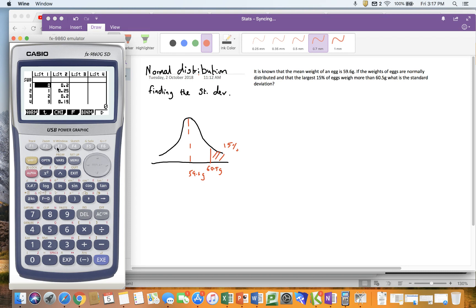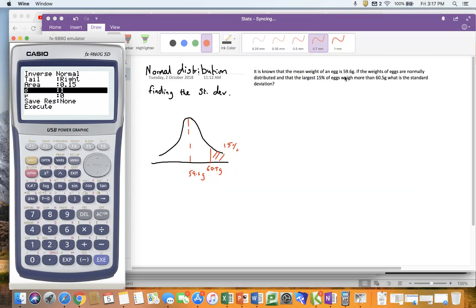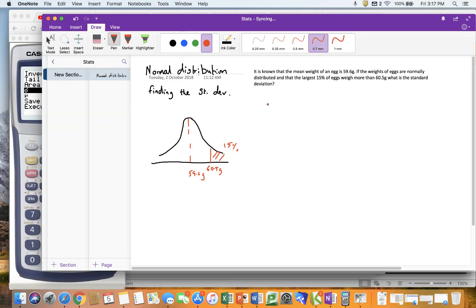My distribution is on the right, my area is 0.15. Once again I've got the mean but I don't have the standard deviation, so I have to use the standard normal.